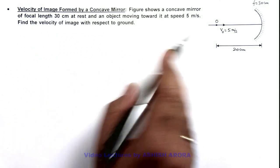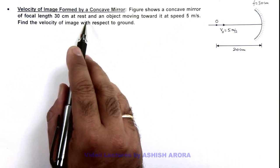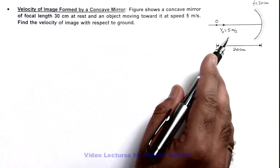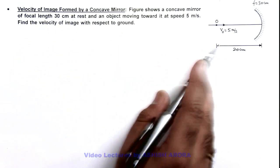Here we are given that the figure shows a concave mirror of focal length 30 centimeter at rest and an object moving toward it at speed of 5 meters per second. And we are required to find the velocity of image with respect to ground.